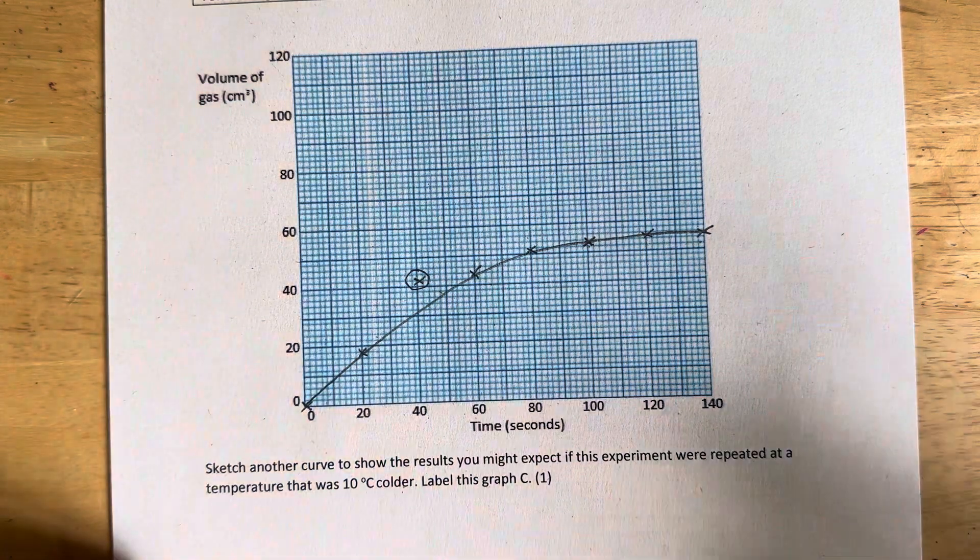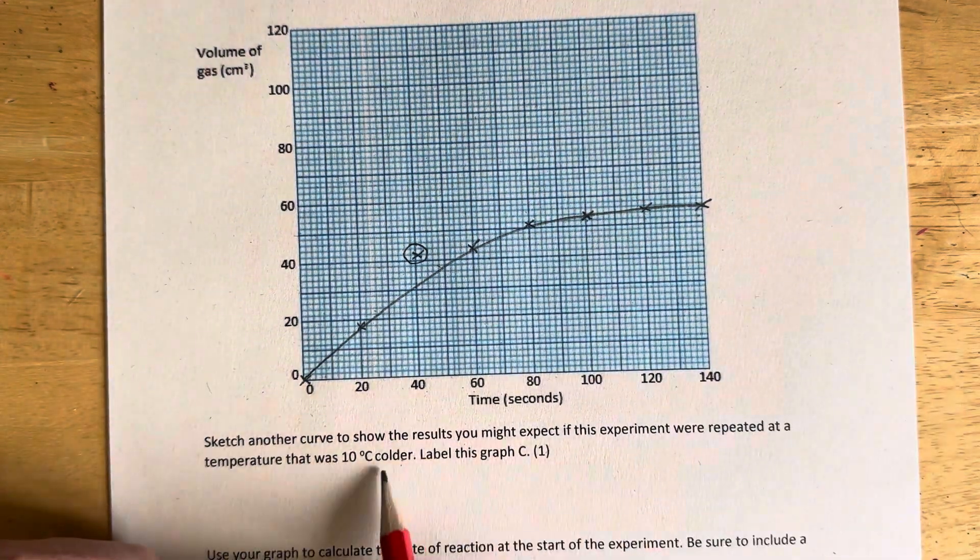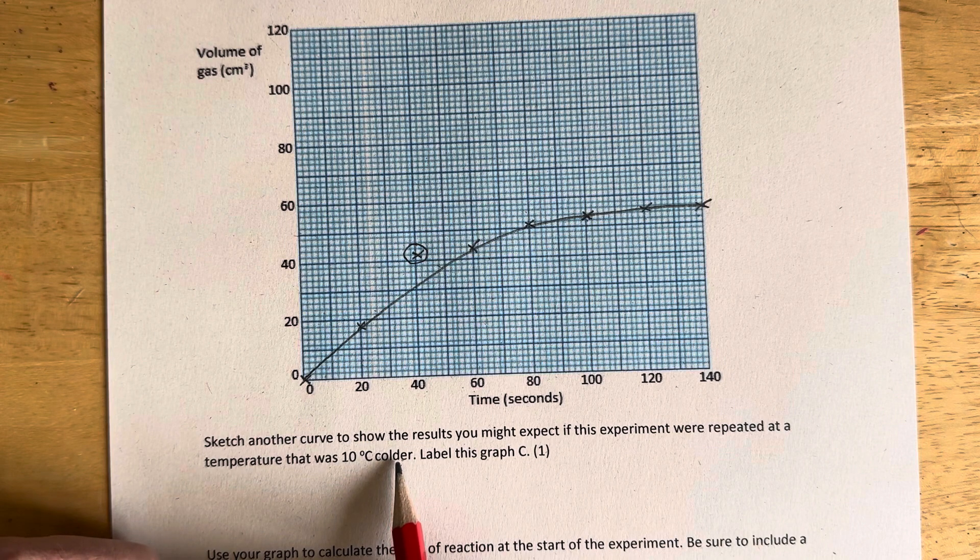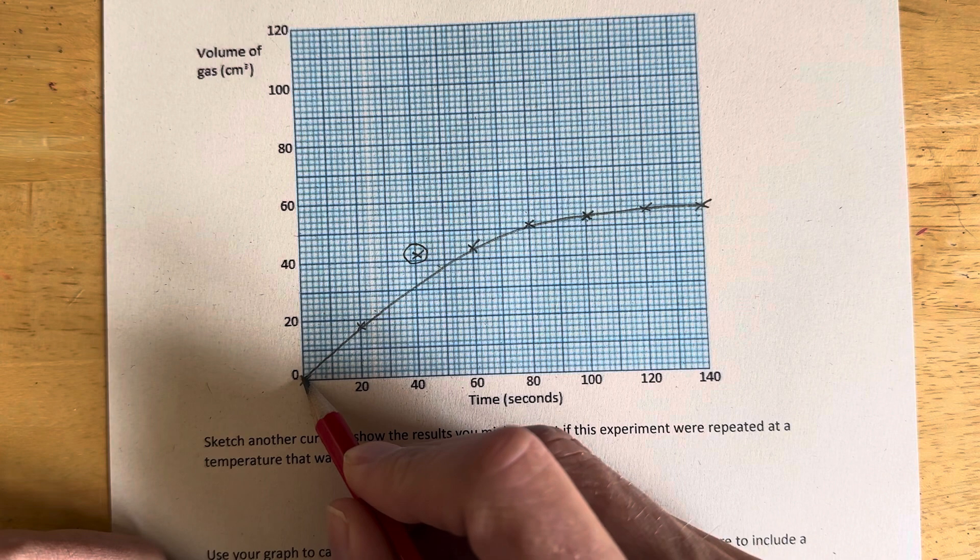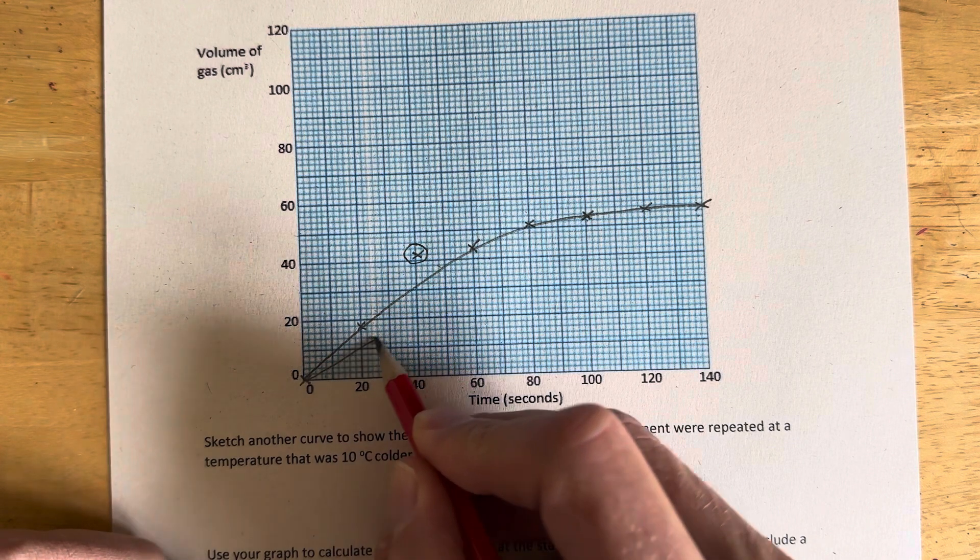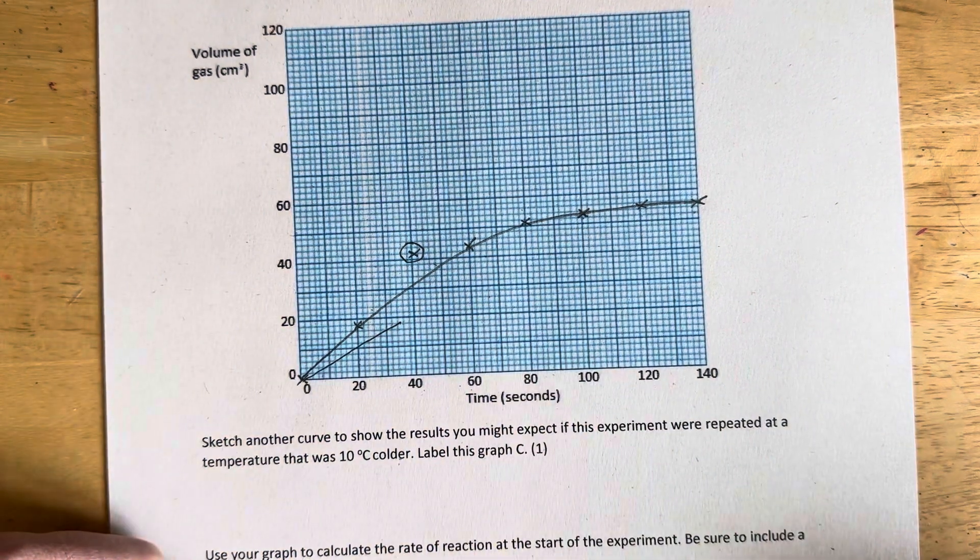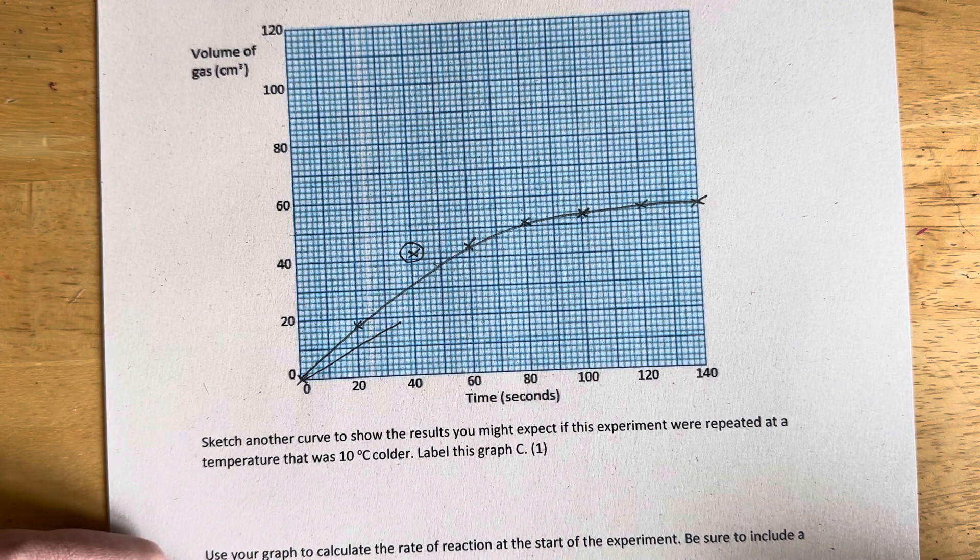So is it going to be a faster rate or a slower rate? Well, this is 10 degrees colder, so that's going to be slower. If it's slower, our curve is going to start less steep. So it's going to start off like that. That's the first thing we need to draw on there, a less steep curve.